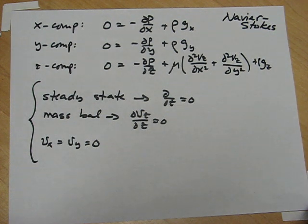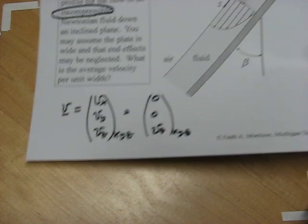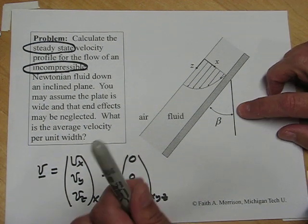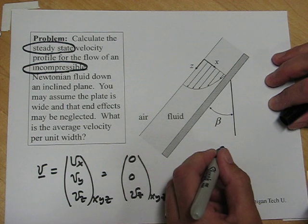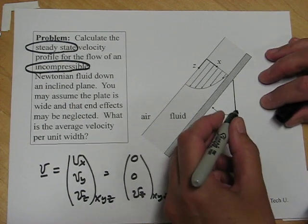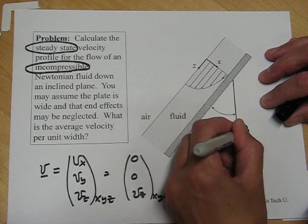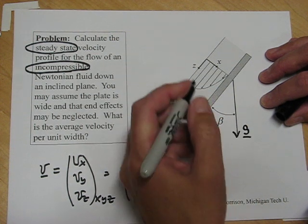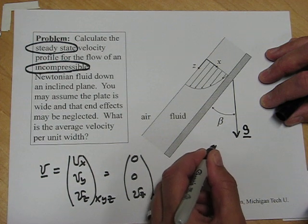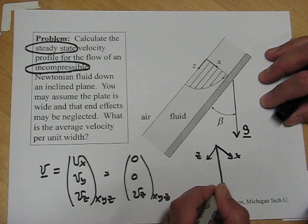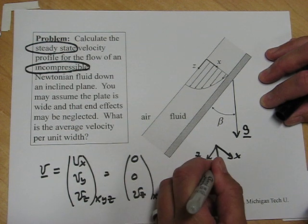Now we want to continue simplifying by going back to our diagram to find out what the gravity vector is. So here's our flow diagram again, and we have the gravity vector is in this downward direction, and we need to write that vector g in our chosen coordinate system. So this is the z direction, this is the x, and this is my vector g, and this is my angle beta.